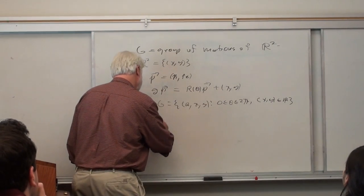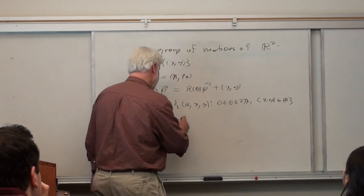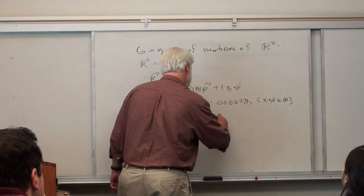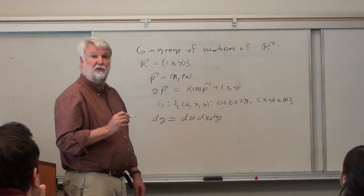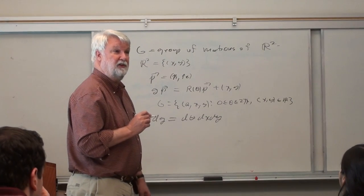And I have a measure on it, DG, which is just D theta, DX, DY, which is the topologically natural one. It turns out it's also the mathematically natural one. If you know what Haar measure is, this is the Haar measure of this group.